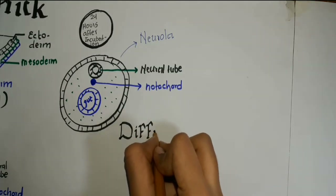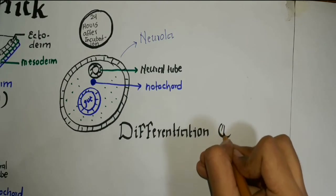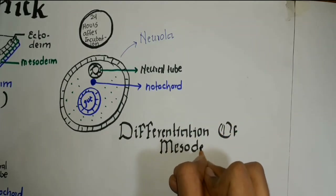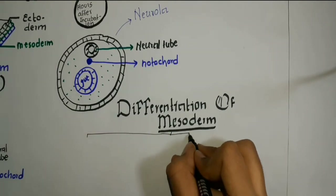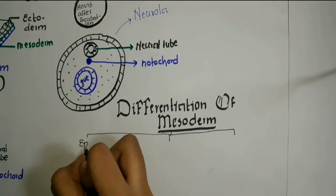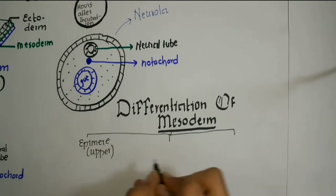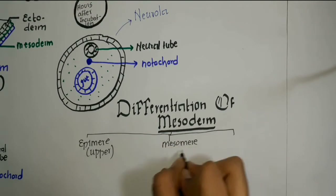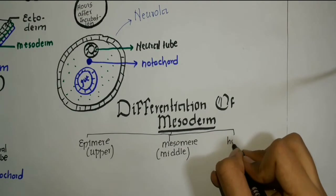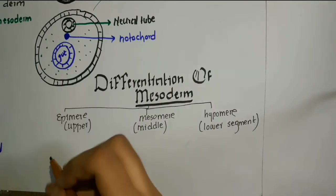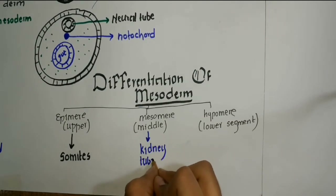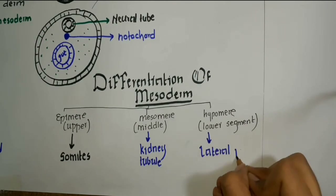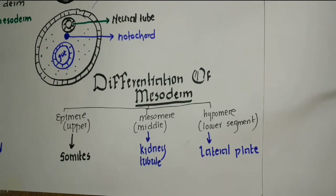Our next topic is differentiation of the mesoderm — how the mesoderm differentiates into muscles, skeleton, bones, and cartilage, and from which part the axial skeleton is formed. The mesoderm is differentiated into three layers: the uppermost epimere, the central mesomere, and the lowest hypomere. From the epimere we have somite formation, from the mesomere we have kidney tubule formation, and from the hypomere the lateral plate is formed, which with further fusion forms the coelom.